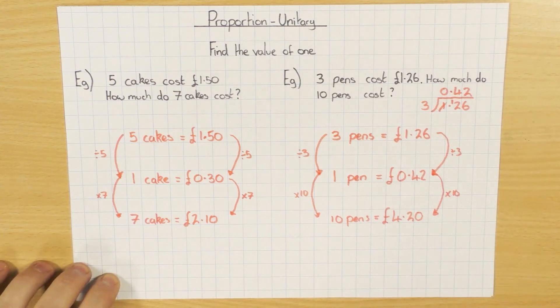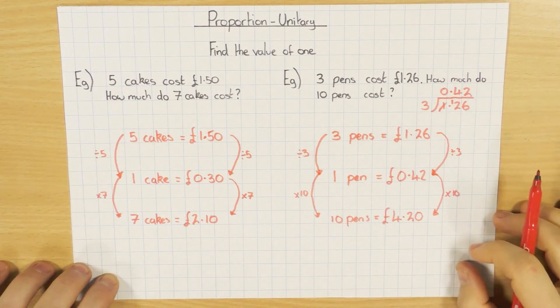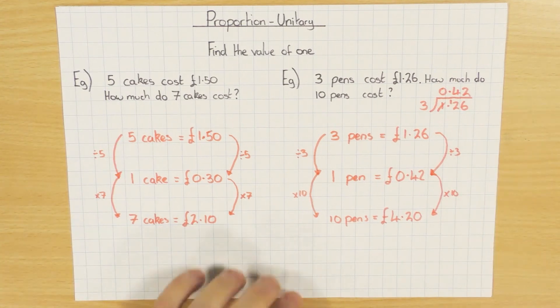So that's all the unitary method is. Just find out the value of 1, and they're two nice easy examples. There is just a few more things to talk about though, so just bear with me while I swap my paper over.